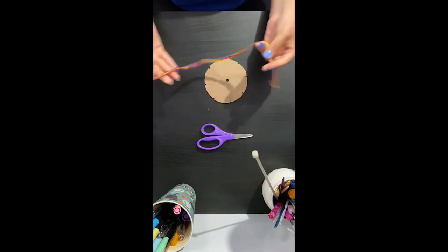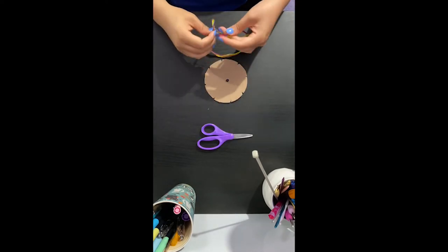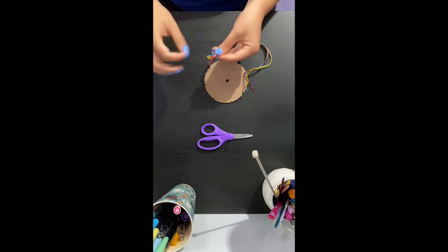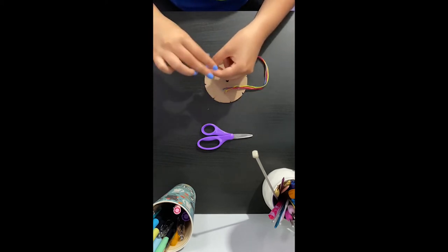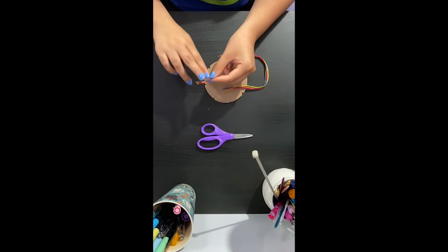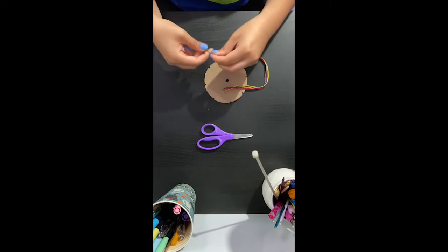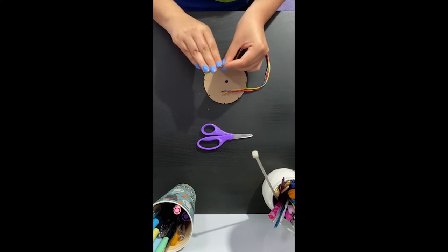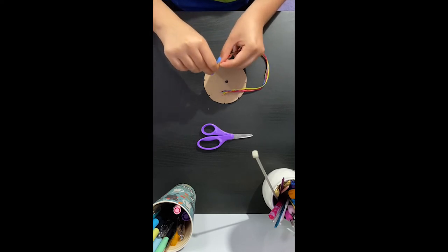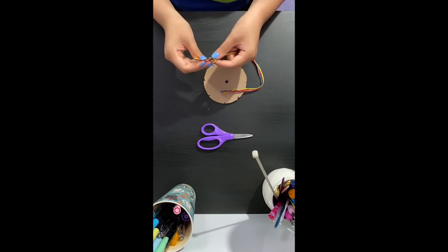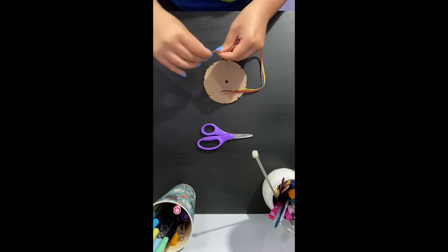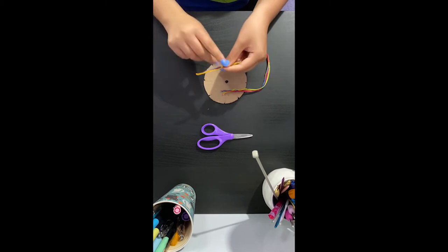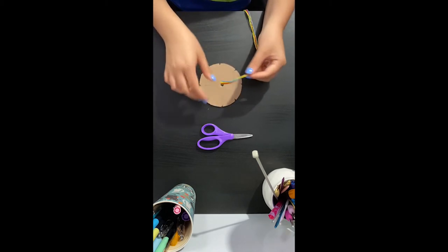So once you have all your strings cut, make sure that they're all together and even. You're going to tie a knot, leaving about an inch, an inch and a half on the end. Or about two to three fingers width. You're going to tie all of them in one knot. Just like this. This tail is a little long, but that's okay.